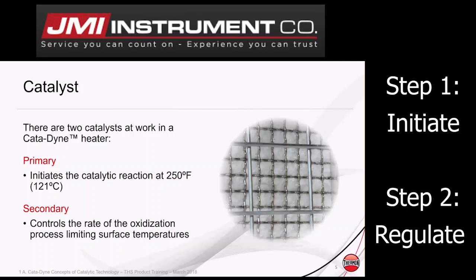We have to control the rate of the catalytic reaction — or control the rate of oxidization — to limit the surface temperature and keep the surface temperature where it needs to be, especially when we're dealing with temperatures within a classified area. So that's the primary and secondary catalysts, all encompassed into the catalytic pad in general.